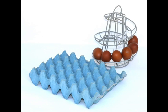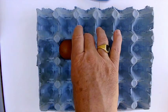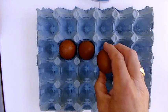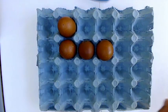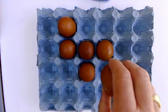I'm going to use six eggs as an example to show you how this works. I'm going to place my eggs on the tray. Two, three, four, five, and six.